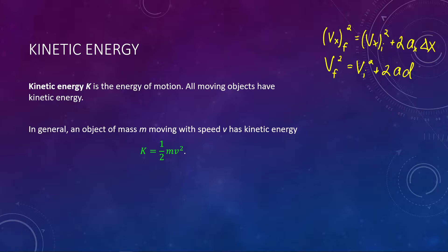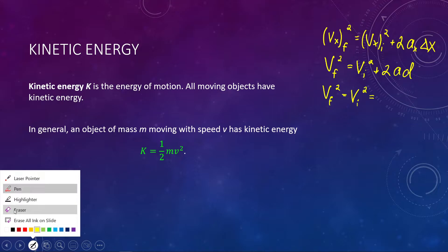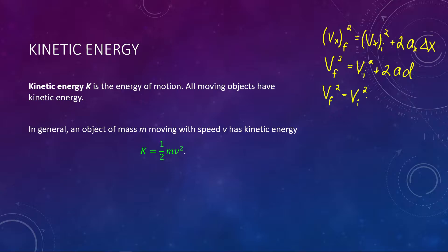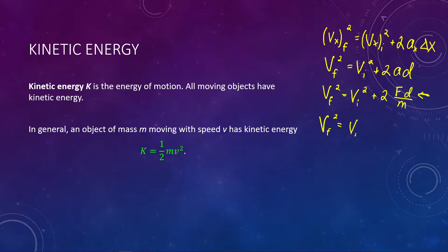Let's start expanding this. We have an acceleration in this equation. Let's write that using Newton's second law: acceleration equals force over mass. So we substitute f over m for a. Notice what we just wrote in the numerator: f times d. From our last lecture, f times d times cosine theta is work. In the situation where the angle between force and displacement is zero, the equation is just work equals f times d. So this just becomes work over mass.